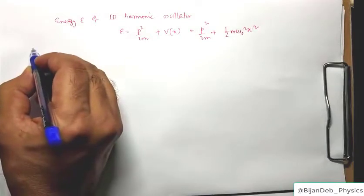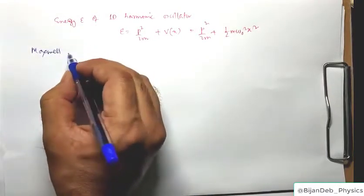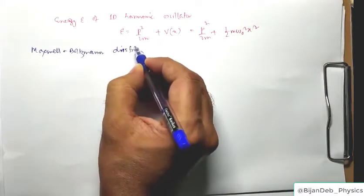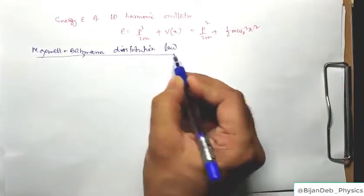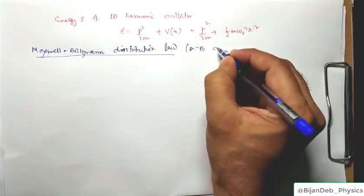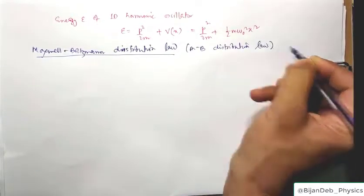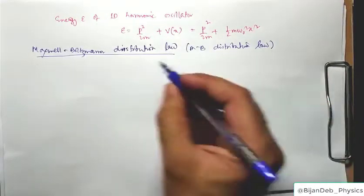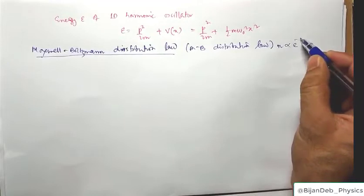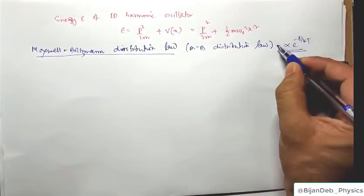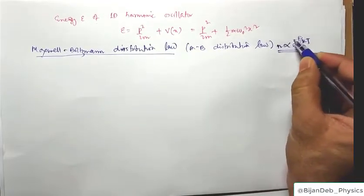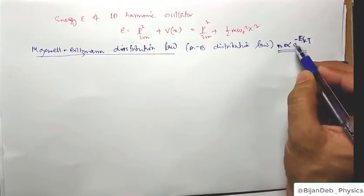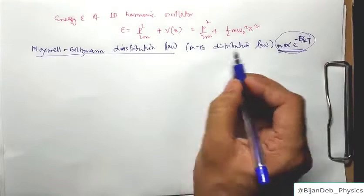One more assumption is that the Maxwell-Boltzmann distribution law is used — this is classical statistics. According to the MB distribution law, the number of oscillators at a particular energy state at temperature T is proportional to e^(−E/kT), where E is the energy and k is the Boltzmann constant.